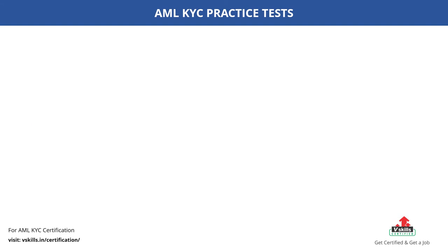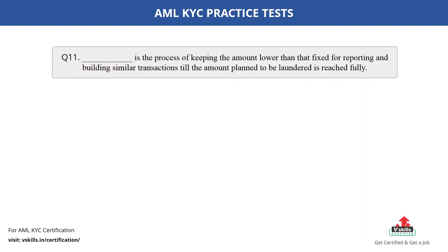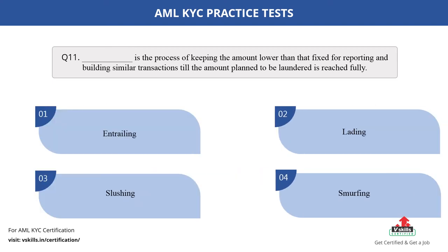Question number 11. Dash is the process of keeping the amount lower than that fixed for reporting and building similar transactions till the amount planned to be laundered is reached fully. Fill in the blank. The options are: A. Entrailing; B. Lating; C. Slushing; D. Smurfing. The correct answer is option D.